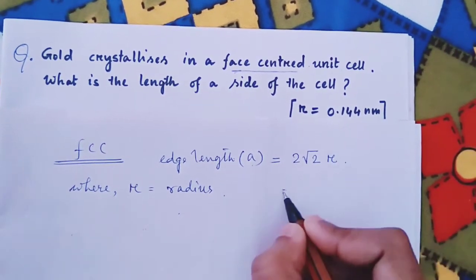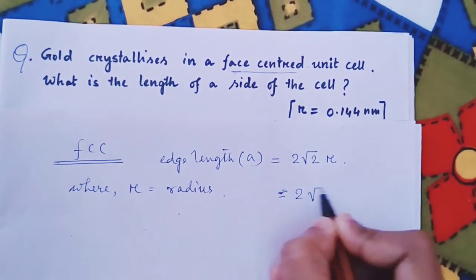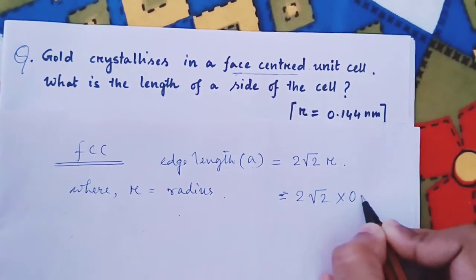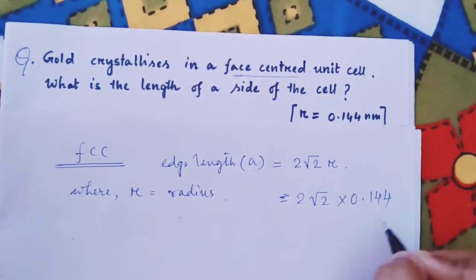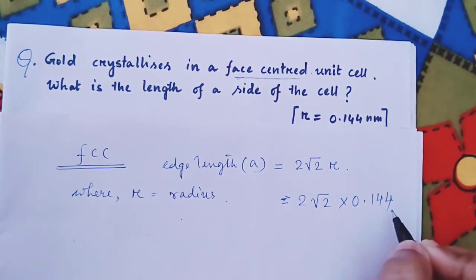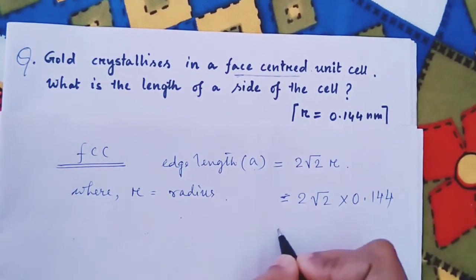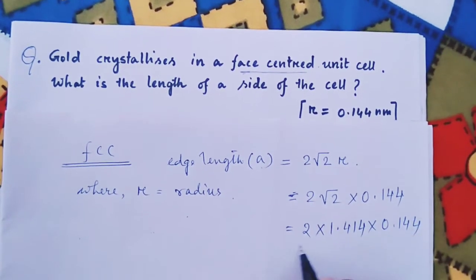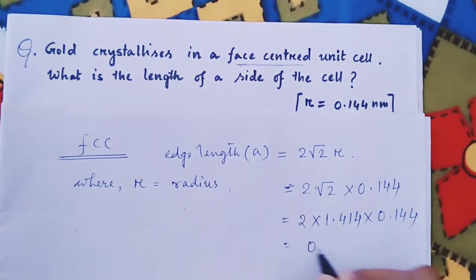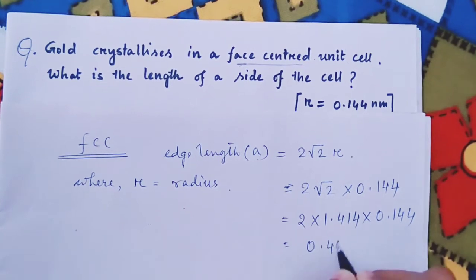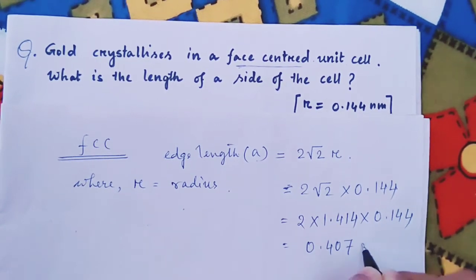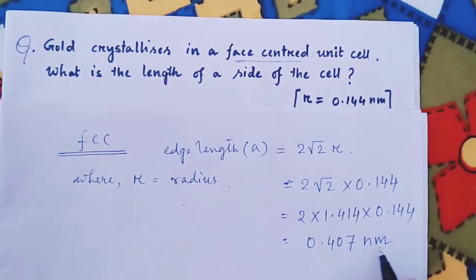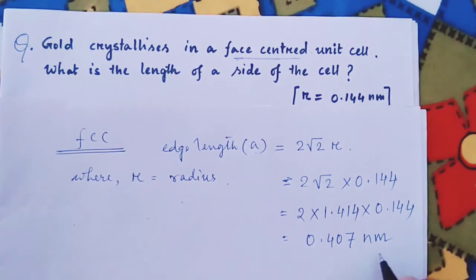So a = 2√2 × 0.144. After calculation, you will get 0.407 nm.